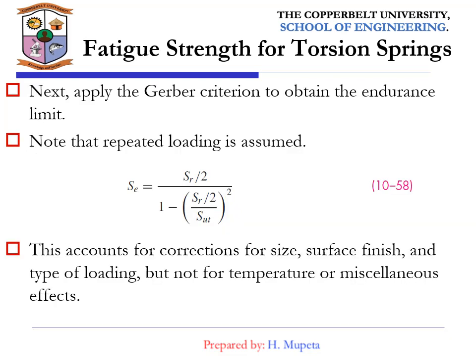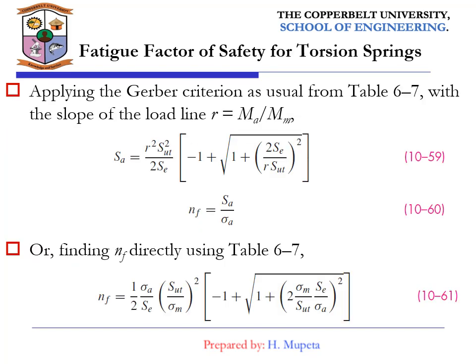For fatigue strength of torsion springs, we apply the Gerber criterion to obtain the endurance limit, since the Zimmerli criterion is not applicable. Repeated loading is assumed as given in equation 10.58, which accounts for correction factors for size, surface finish, and type of loading — but not for temperature or miscellaneous effects. Applying the Gerber criterion with the slope of the load line from table 6.7, we get equation 10.59, the factor of safety from equation 10.60, and it can also be found directly from table 6.7 as equation 10.61.